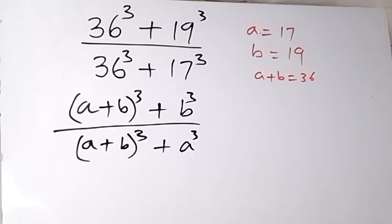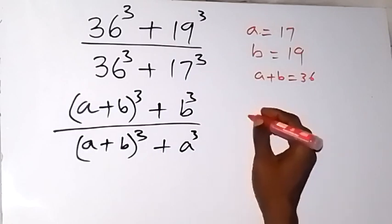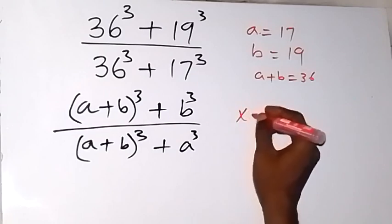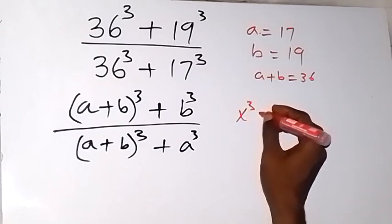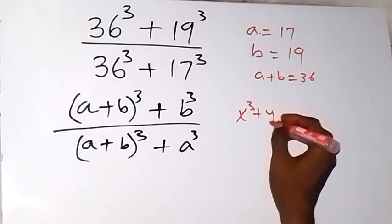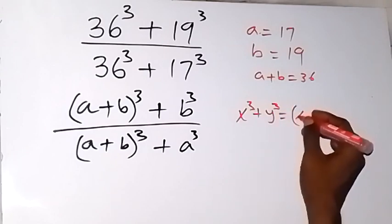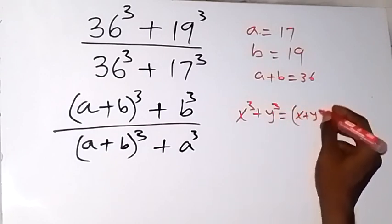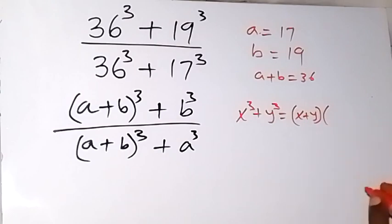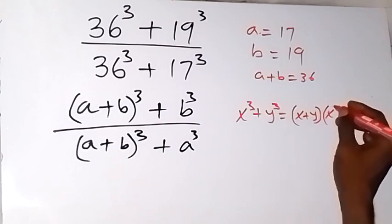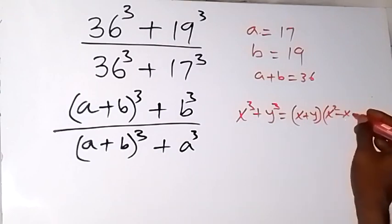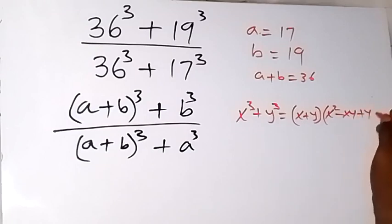From here, we can apply an identity we know: x cubed plus y cubed equals (x plus y) multiplied by (x squared minus xy plus y squared). This is the identity we will apply to simplify the expression.